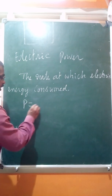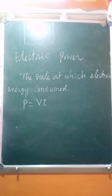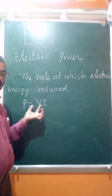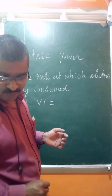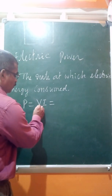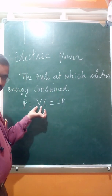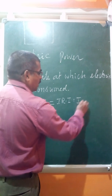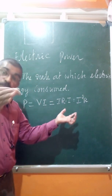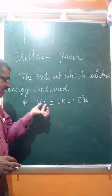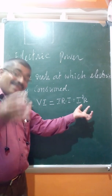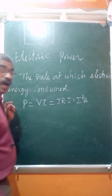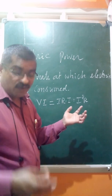Electric power: we already discussed P is equal to VI. When potential difference is multiplied by current, you get power — P equals VI. If you substitute V using Ohm's law, V equals IR, then P equals I squared R. So while calculating power, if potential difference and current are given, use P equals VI. If current and resistance are given, use P equals I squared R.